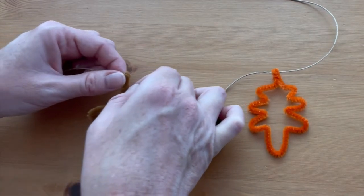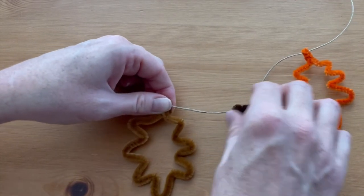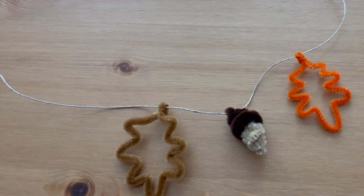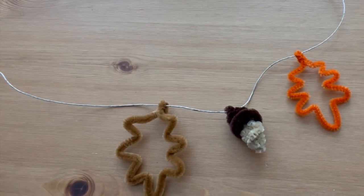Add another leaf and continue on, alternating acorns and leaves, until the garland is as long as you would like it to be.